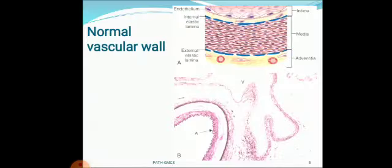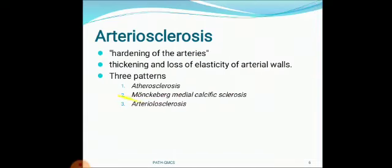Before going to the various lesions of the heart, let's see the picture of a normal vascular wall. The innermost layer is the intima, composed of endothelial cells, then the internal elastic lamina, then the media — the middle layer — then the external elastic lamina, and then the adventitia. This is the normal layered structure of the vascular wall.